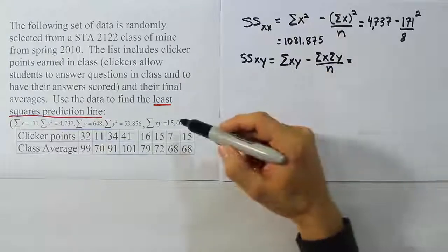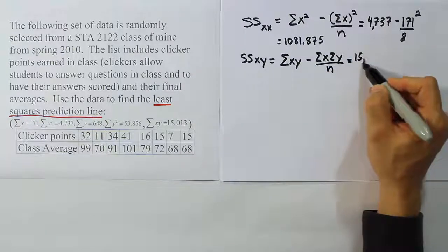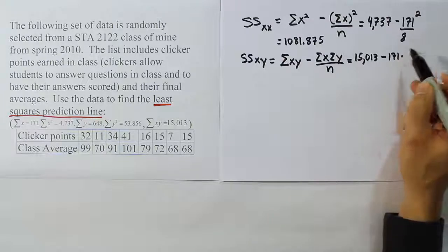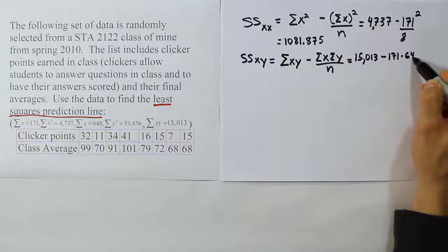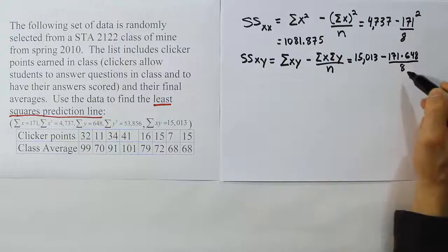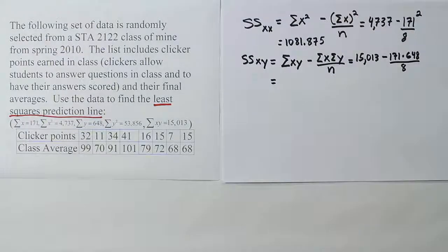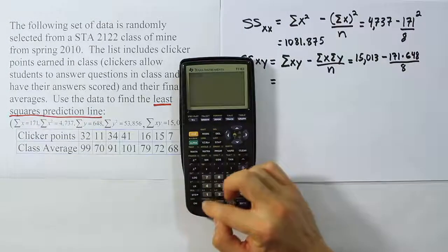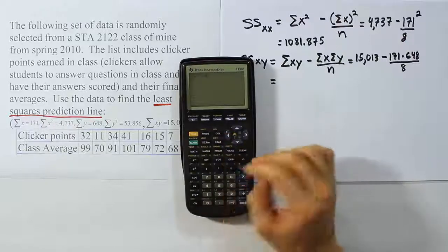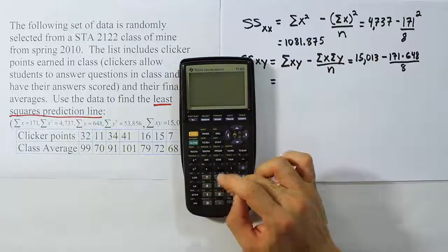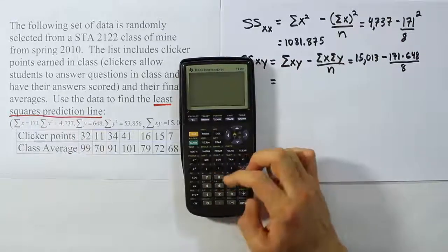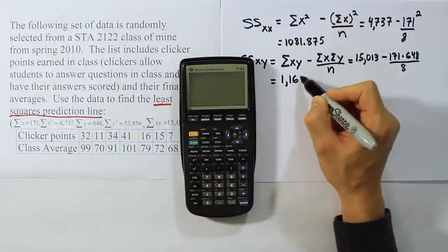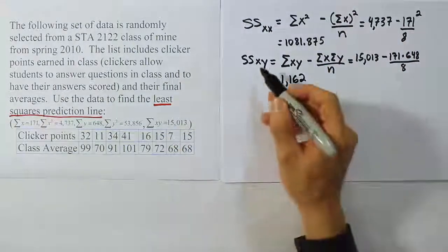Now the summation of XY we have, it's 15,013. So 15,013 minus the sum of X, which we saw was 171, times the sum of Y, which is 648, all divided by 8, which is the number of ordered pairs in the problem. Let's see what that works out to be with our calculator. We have 15,013 minus 171 times 648 divided by 8. We get the answer 1,162. That's our sum of squares for the mixed term XY.